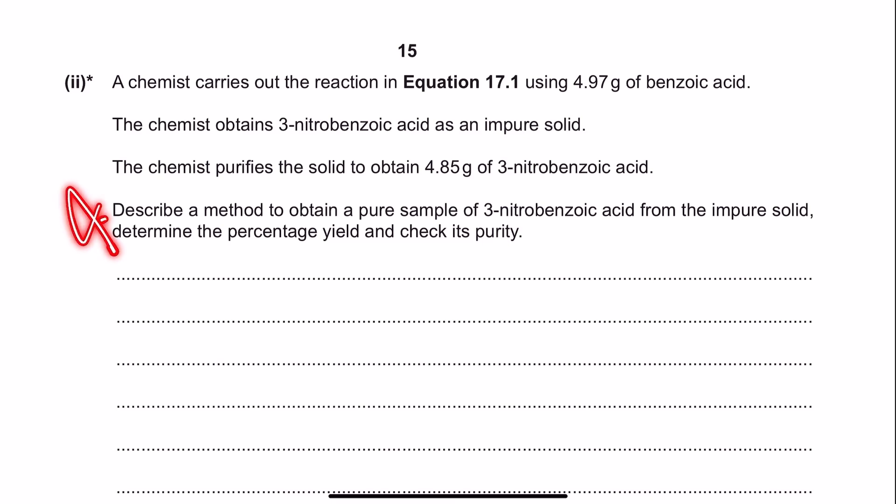The question gives instructions as a level of response question — one big bulky sentence rather than a tiered system. We need to pluck out the separate instructions. First: describe a method to obtain a pure sample, which is a purification of organic solid — a recrystallization. Second: determine the percentage yield, which includes a calculation. Third, the sneaky one: check its purity. That's not just part of the recrystallization — we'll need melting point analysis to tie off this question.